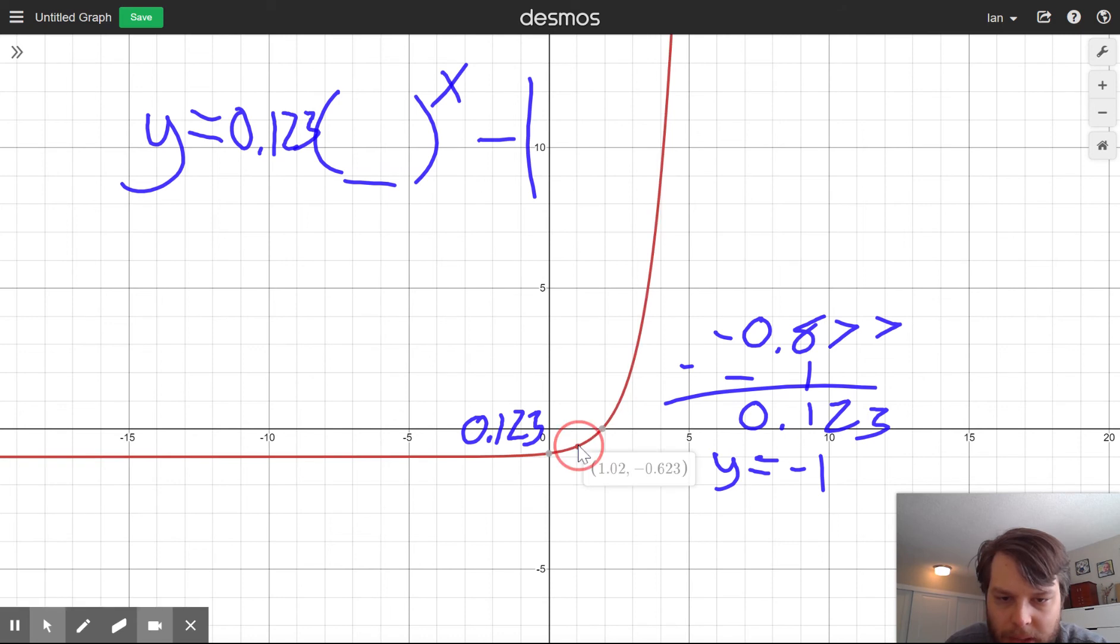Okay, so when we go to x equals 1, what do we get? Come on, work with me. Negative 0.631. Okay, let's do the same little subtraction thing.